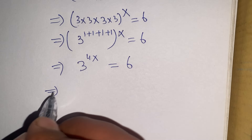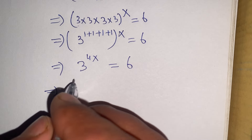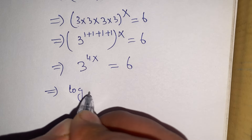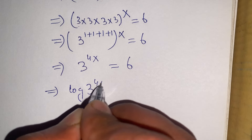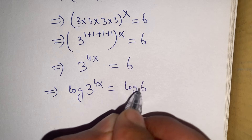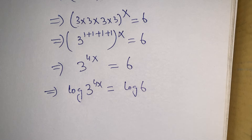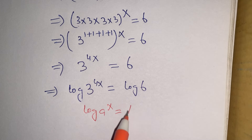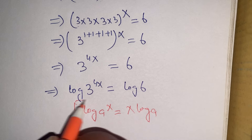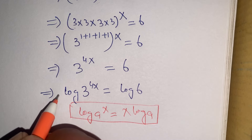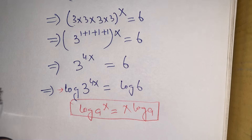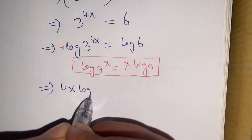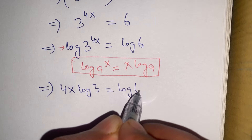This is an exponential equation. To remove the exponential, we take the logarithm on both sides. We write: log of (3 to the power 4x) equals log of 6. Using the logarithm property log(a^x) = x times log(a), we apply this to the left hand side and get: 4x times log 3 equals log 6.